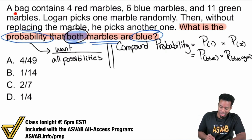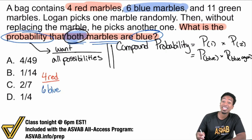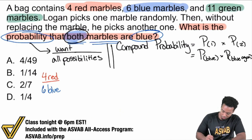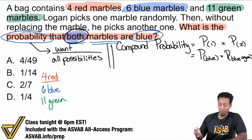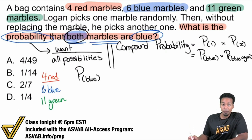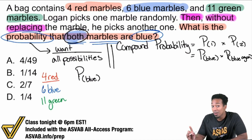The information says: a bag contains four red marbles, six blue marbles, and eleven green marbles. We have four red, six blue, and eleven green. Now here's a piece of information that almost everybody overlooks when starting off — it says: Logan picks one marble randomly and then, without replacing the marble, he picks another one. That's going to be very important in a moment. Remember that.